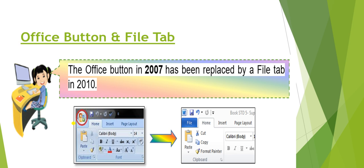An important thing about Microsoft Excel: in Excel 2007 we have an Office button, and features like creating a new file or opening an existing file are included in the Office button. But this Office button is replaced by the File tab in 2010 and higher versions. In the File tab you can create a new file, open a file, or print the Excel sheet.